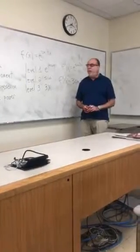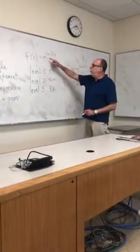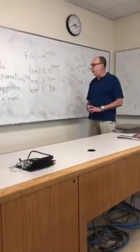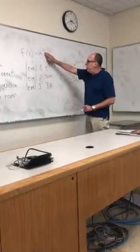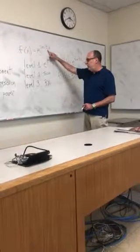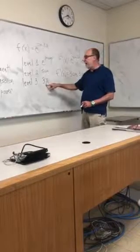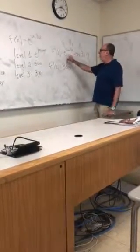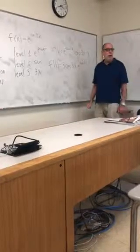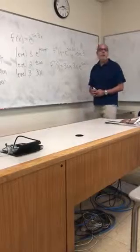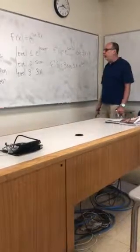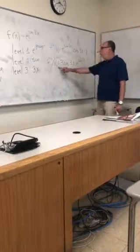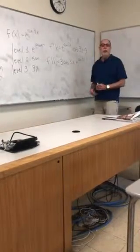Let's look at something that has more than two levels to the function: e to the sine of 3x. What are we doing at the top level? We're taking e to a power — that's level 1. Level 2: let's look at the power — we're taking the sine of a complicated angle. Level 3: what is the complicated angle? It's 3x. So f prime is the derivative of level 1 — the derivative of e to a power is e to the power — times the derivative of level 2, the derivative of sine of an angle is cosine of the angle, times the derivative of level 3, the derivative of 3x is 3. Rearranging the order of multiplication, we end up with 3e to the sine of 3x times cosine of 3x.